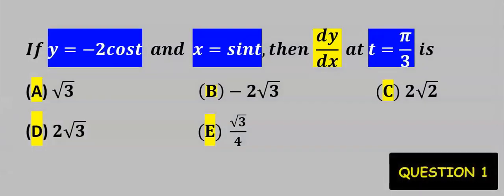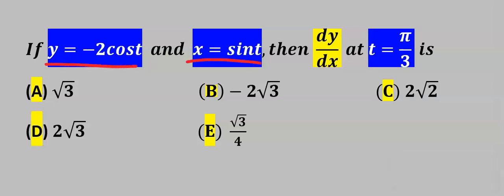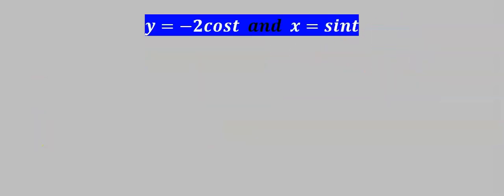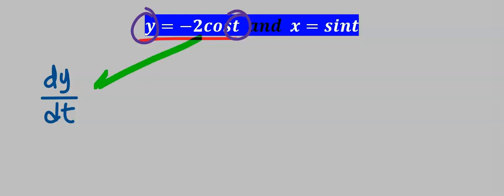Let's find the dy/dx of this function. Here we have two functions and we are going to apply parametric differentiation. When we obtain our result we are going to substitute t = π/3. To solve this problem, let's consider the first function — this is y and this is t — hence we are going to find dy/dt.